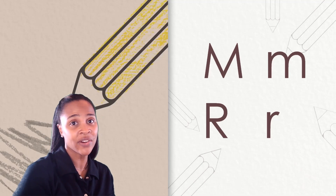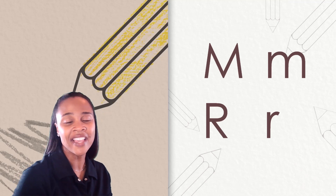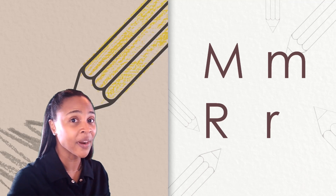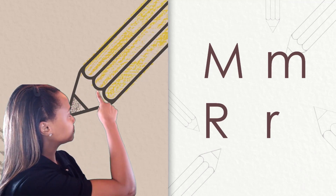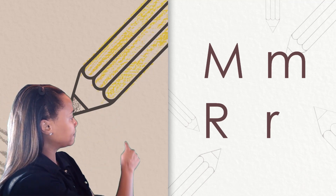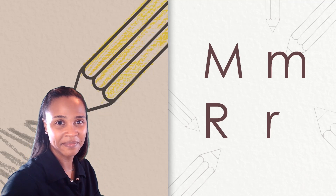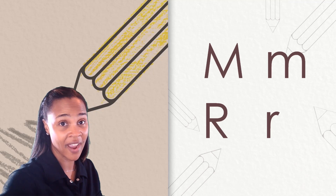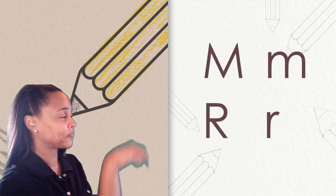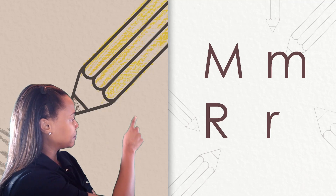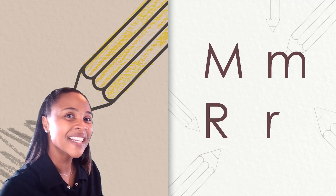Today we are going to learn to write the letters M and R. We're going to practice skywriting them first. I want you to watch me and then it'll be your turn. I'm going to start with the uppercase M. Watch as I write and make the sound for uppercase M: M, M, M. Now you try. Awesome! Now let's try to write the lowercase M starting at the middle line. Watch me first and then you'll try: M, M, M. Your turn. Nice work!